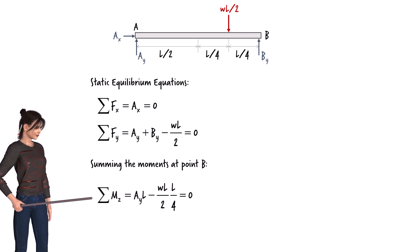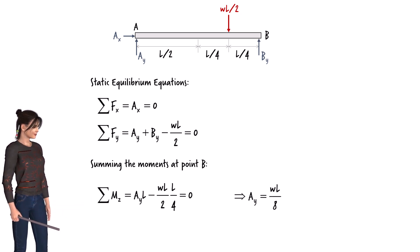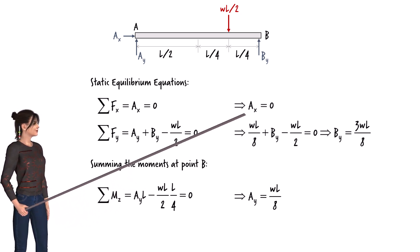Solving the moment equilibrium equation for A-y, we get the result. We can then solve for B-y using the second equilibrium equation. The first equation gives A-x equals 0.